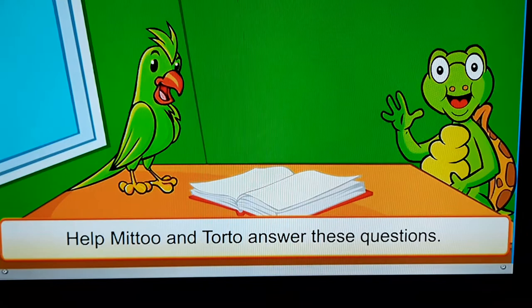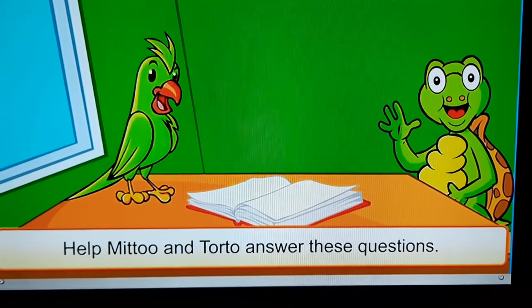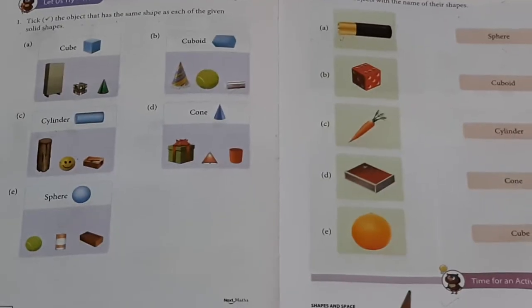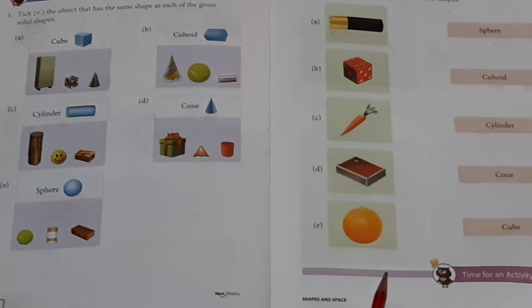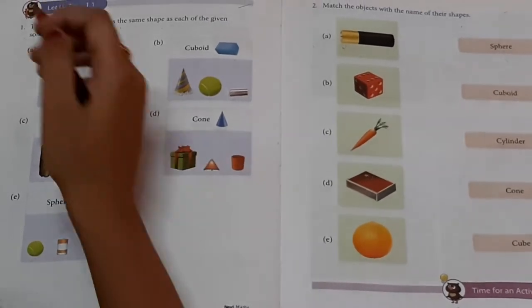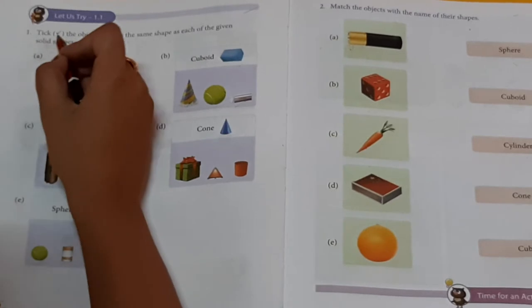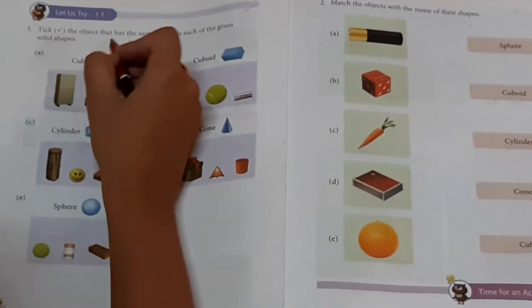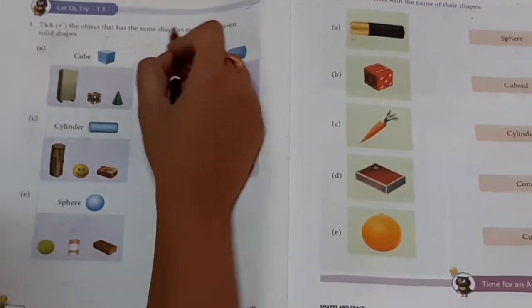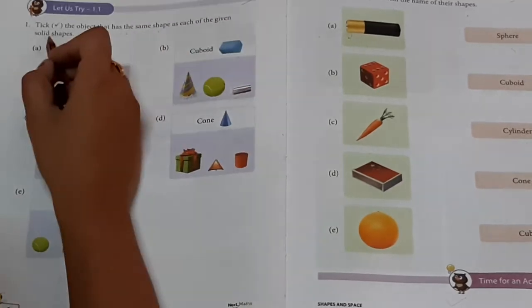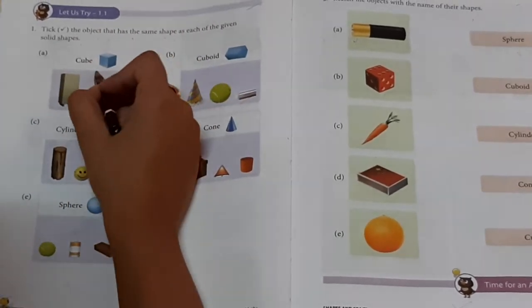Help Mechu and Torto answer these questions. Now, let us try one point one. First question, tick. Write the object that has the same shape as each of the given solid shapes.